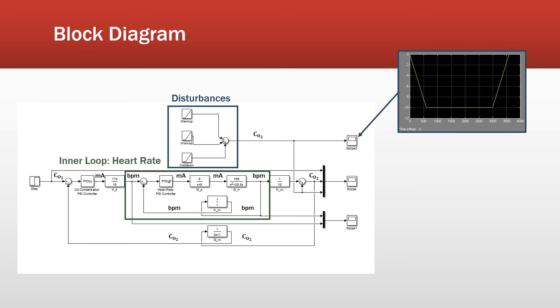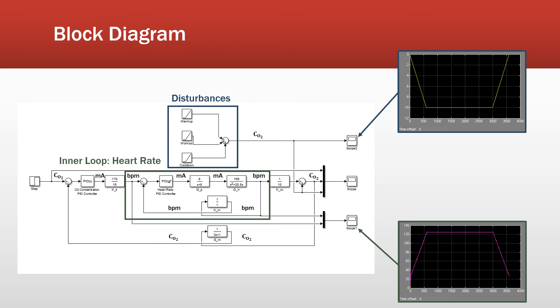The second part is this inner loop. So we have a cascade controller where we have an outer loop and an inner loop. This inner loop we got from the literature, and it is regulating our heart rate. So you can see the mirror image of the response of the heart controller, the pacemaker, to our disturbance. So as the oxygen concentration in your blood decreases, the heart rate increases to try to keep the concentration of oxygen within the range that we've set.